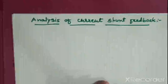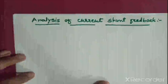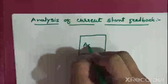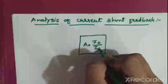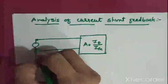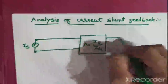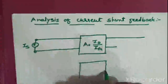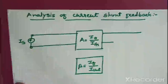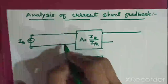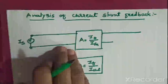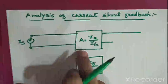Now let us analyze current shunt feedback by drawing the block diagram. Here is an amplifier where A is equal to IO upon Iin. This is the input, here is the output, and this is the feedback circuit where IF is equal to β times IO. The feedback network picks up a part of the output current and produces a feedback voltage in parallel with the input signal voltage.